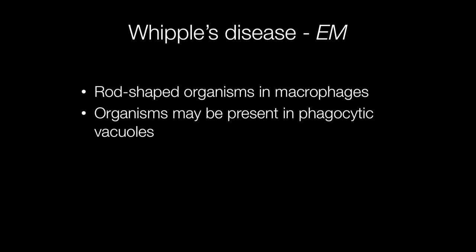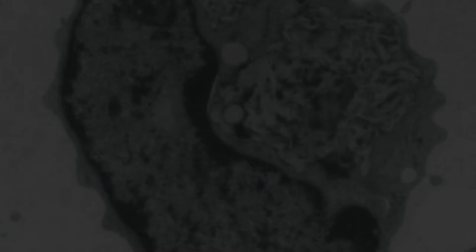With electron microscopy, the rod-shaped organisms are seen in macrophages or histiocytes, and the organisms may also be present in phagocytic vacuoles. Here are a couple of electron micrographs showing the rod-shaped bacteria within the histiocyte.